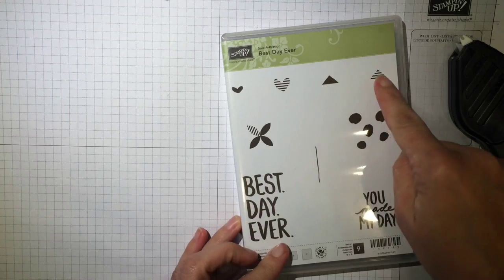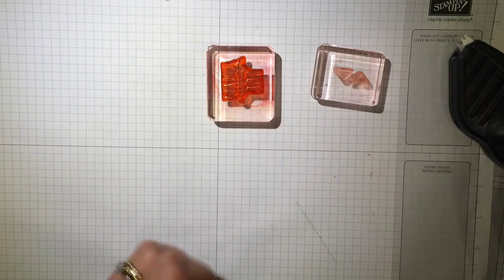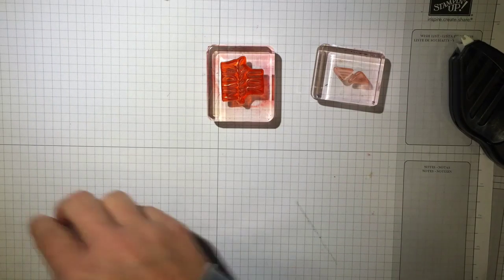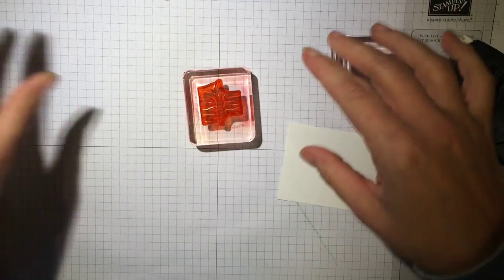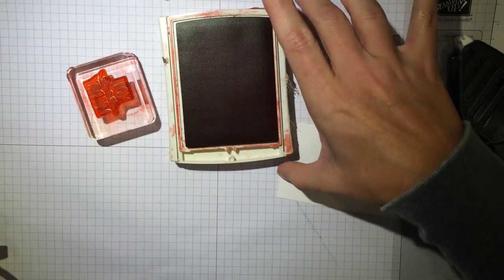We're going to use both triangles and the You Made My Day stamp. You need a piece of Whisper White paper. Mine is right here. And you need real red first, actually second.